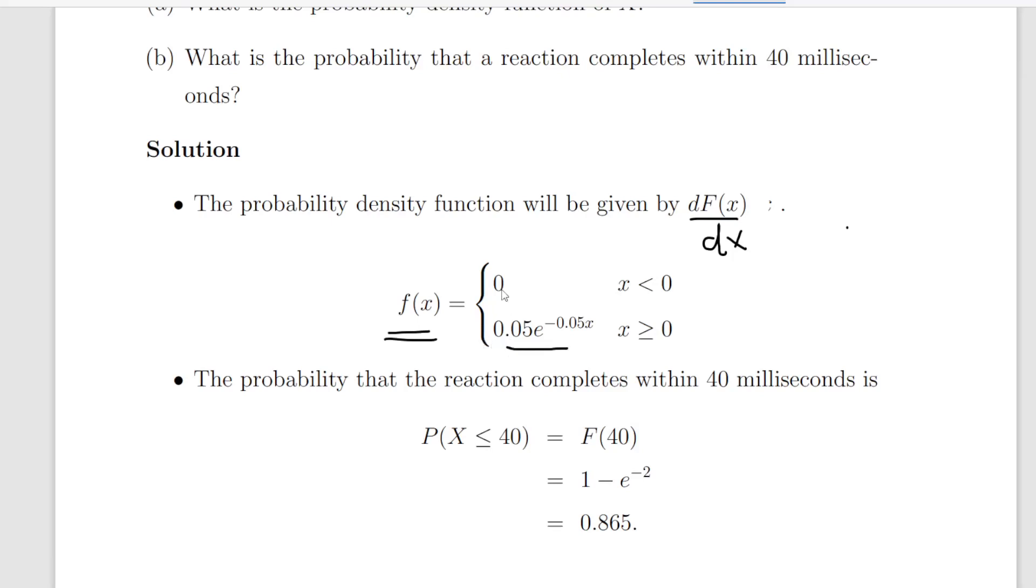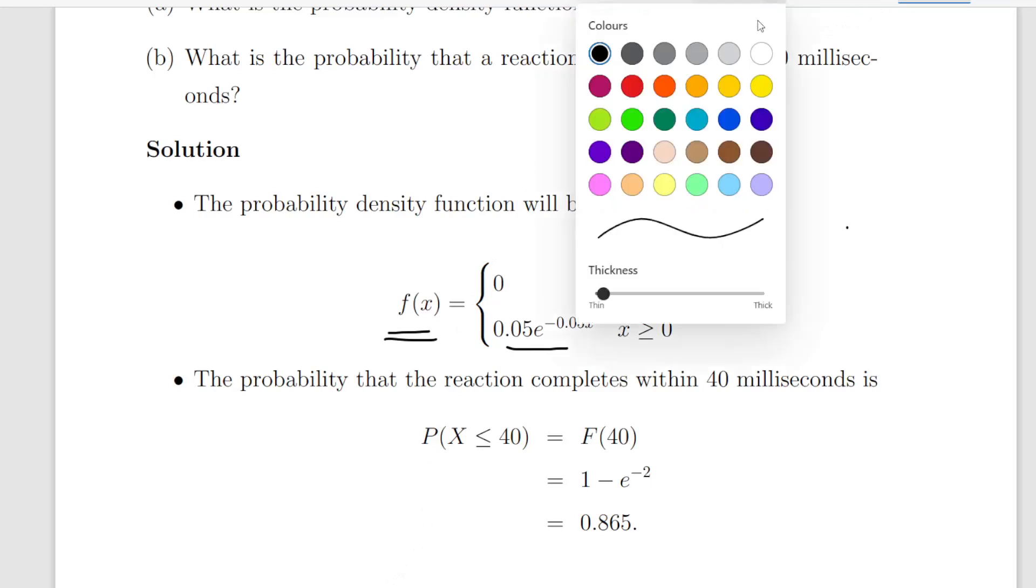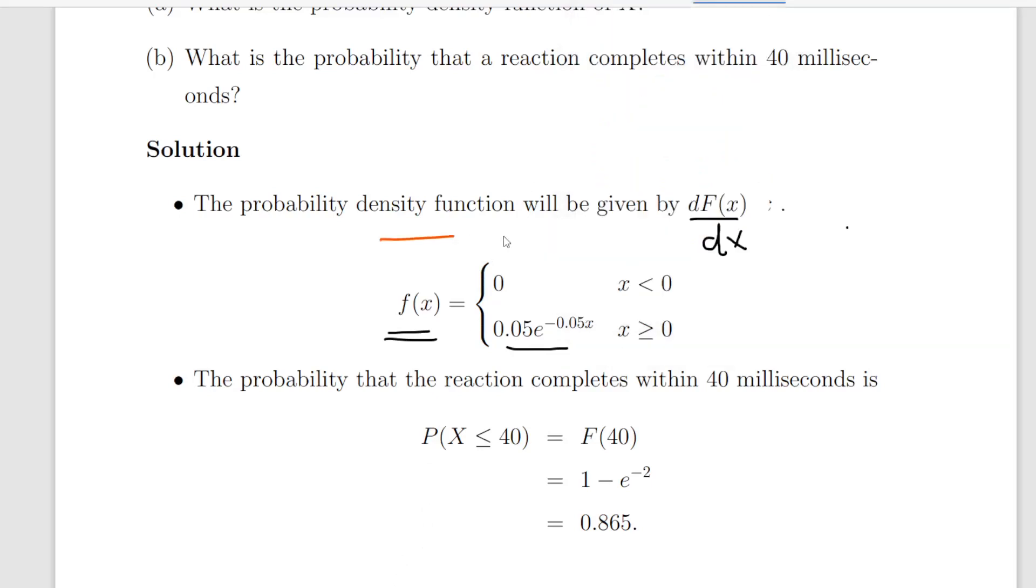So f of x is 0 where x is less than or equal to 0 and 0.05 times e to the minus 0.05x where x is greater than or equal to 0. So when you're answering your question make sure that you have something like this as your answer, this part here. And also just remember to state what x is.